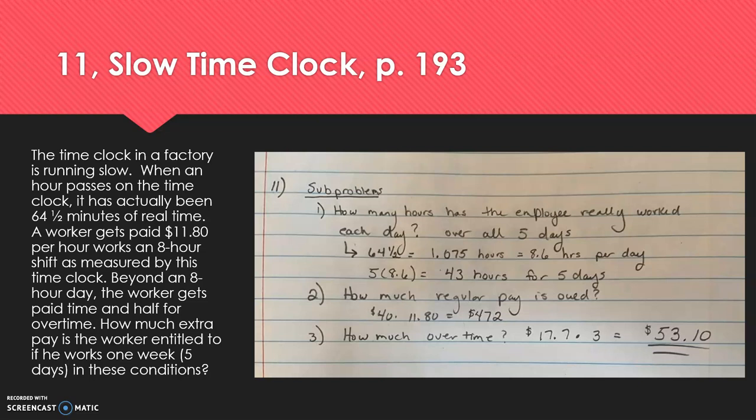So the second question would be, how much regular pay is owed to this individual? Well, it's 40 times 11.8, and that would give us $472. And then how much extra pay or overtime? That would be the 17.7 times three. Where am I getting 17.7? Because we take that base rate of 11.80, we divide it in half and add that. So they get a full amount plus an extra half, which would be $17.70. Multiply that by three, and that would give us $53.10. Quite frankly, I didn't need step two.